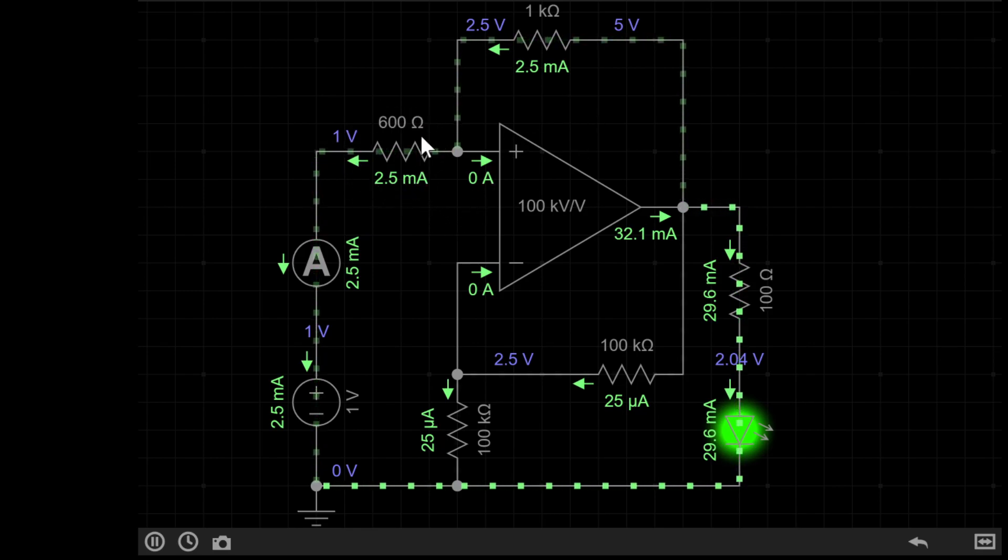There's one on the input here, the non-inverting input. There's a feedback 1k resistor at the top. There's a 100k from the negative input to the output. A 100k down to ground, as well as a 100 ohm resistor and an LED on the output. The 100 ohm is just to give the LED a reasonable current.